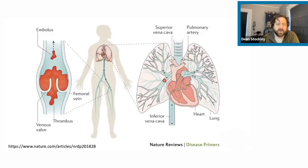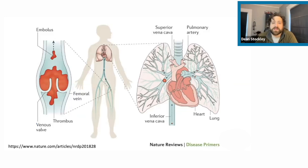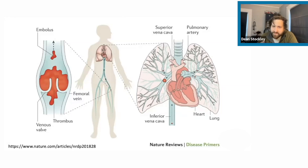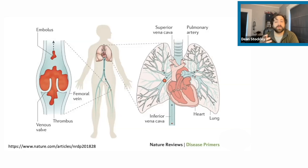Let's talk about PE specifically. It usually starts as formation of a thrombus in a deep vein, usually the lower legs. Then you get embolization of that thrombus — a thrombus is a blood clot, and embolization means it becomes a mobile blood clot — which leads to obstruction in the pulmonary vasculature. Again, three classifications: low risk, intermediate risk or sub-massive, and high risk or massive. The pathophysiology comes down to two major consequences. One is VQ mismatch — ventilation-perfusion mismatch.